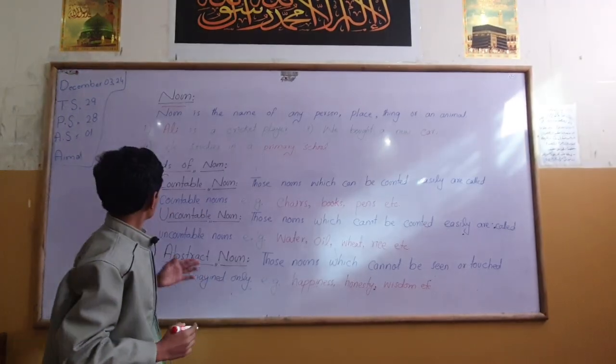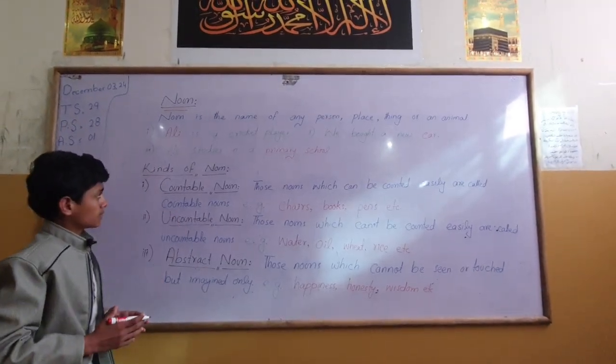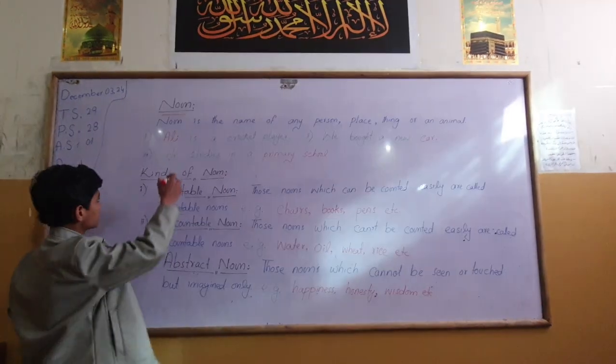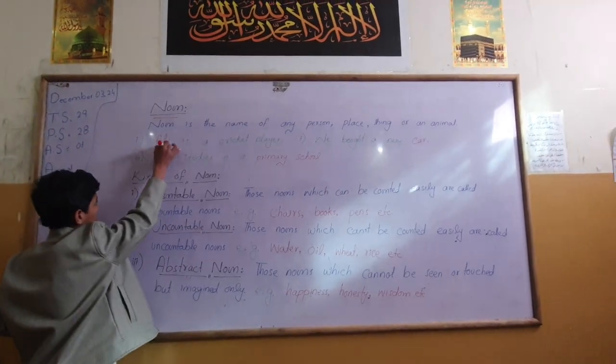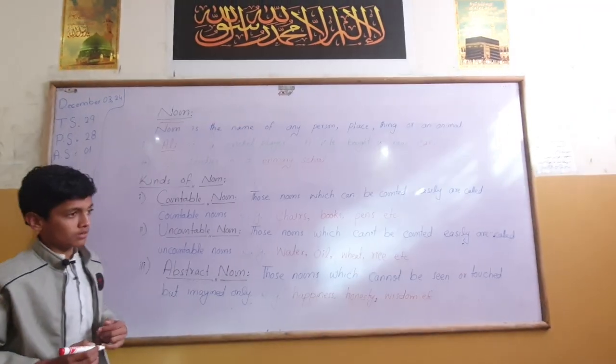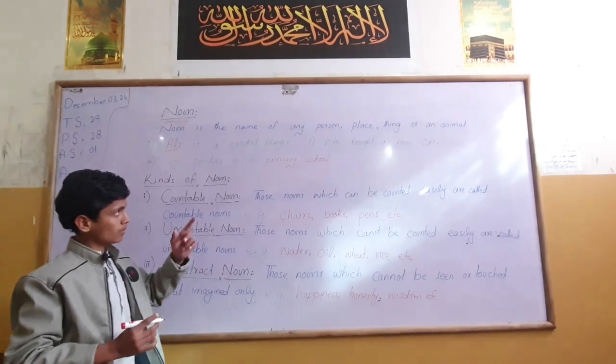For example, Alif is a cricket player. In this sentence, the word Alif is a noun, and it stands for the name of a person.